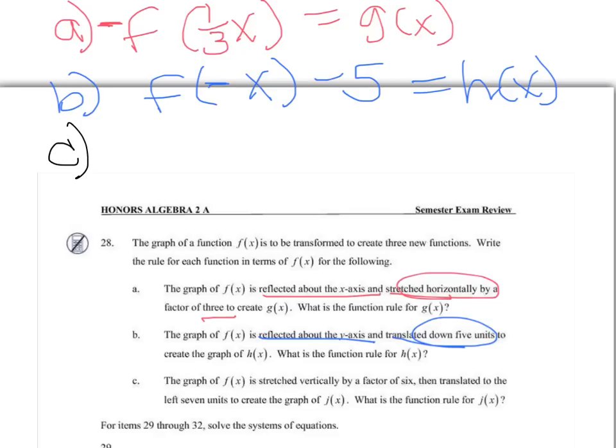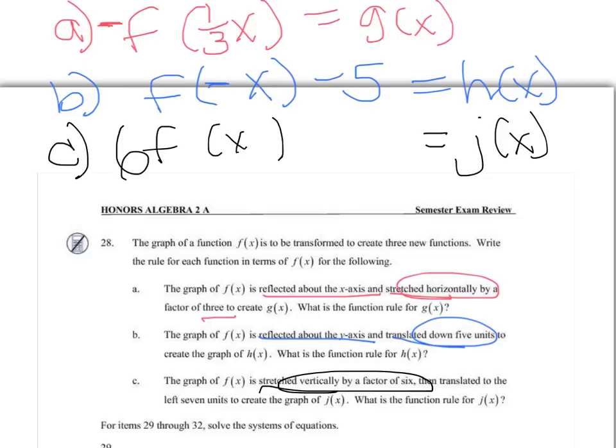And then for part c, this is going to be j of x. Stretched vertically by 6 is a 6 in the front. Left 7 is going to be plus 7 on the x. And that's the only pieces for c.